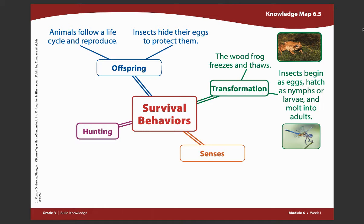Let's look at offspring first. We know that animals follow a life cycle in order to reproduce. Let's start with transformation. We learned that the wood frog freezes and thaws.